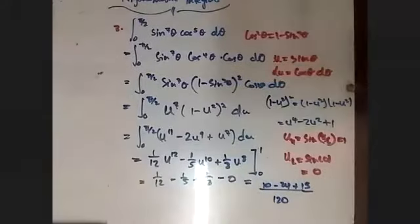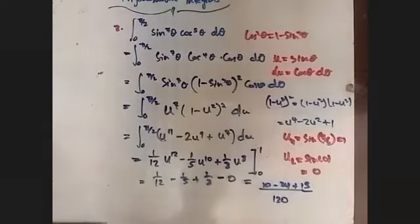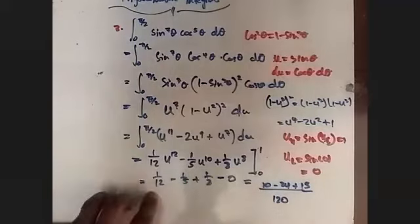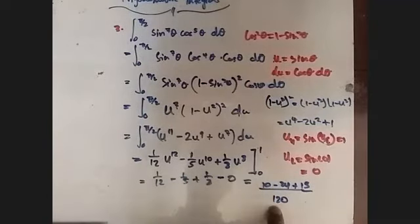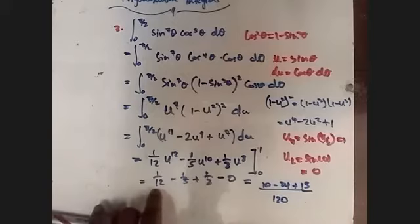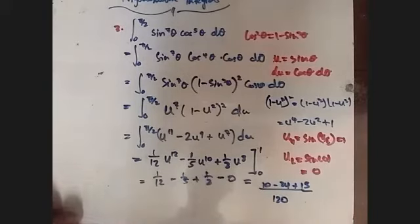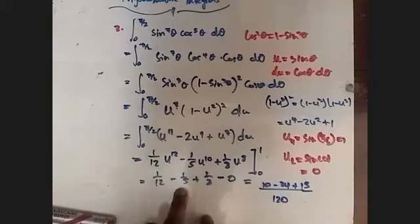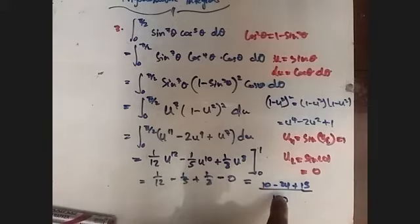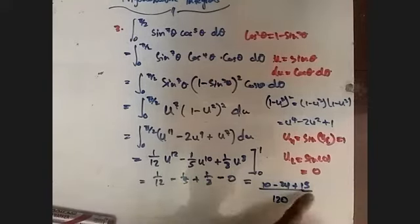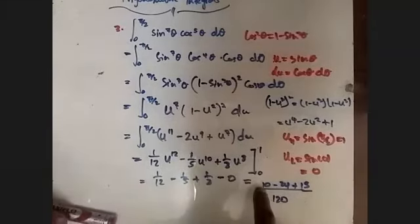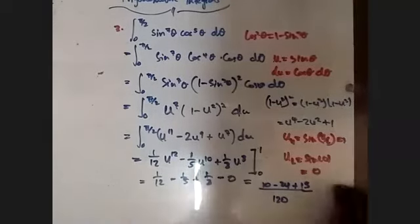From here we know that when we divide 120 by 12, we get 10. 10 times 1 is just 10. And when you divide 120 by 5, it's 24. 24 times 1 is 24. When we divide 120 by 8, we get 15. 15 times 1 is just 15. So 15 plus 10 is 25, and 25 minus 24 is just 1.